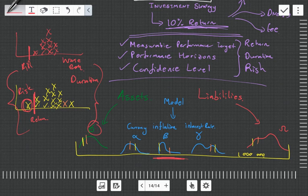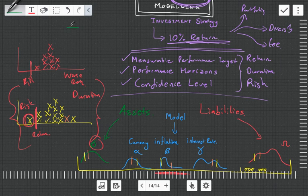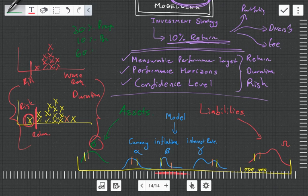What the actuary will do is they will keep playing around with different types of assets, putting it in the model and seeing what happens. Because of the dynamic links it's very difficult to do this without using a model. When I mean play around with assets, I mean maybe 30% in property, 10% in bonds, 60% in shares.